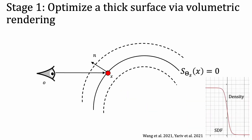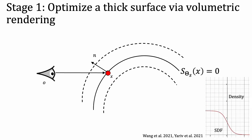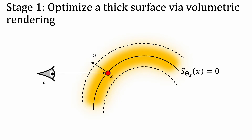In our system, we implement volume rendering by passing the output of the neural SDF through a flipped sigmoid function with a learnable width to obtain a density value at each location, as in prior work NeuS and VolSDF. We then sample multiple points along each ray to perform volume rendering.